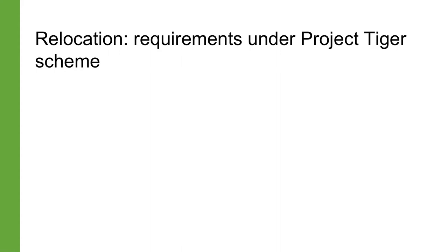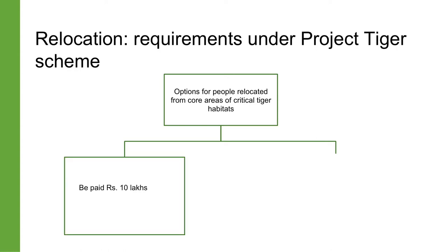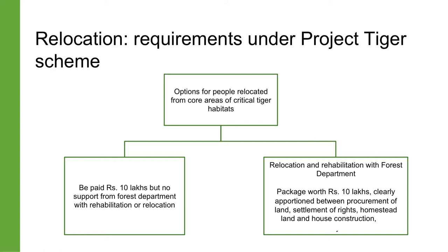Under the Project Tiger scheme, people who may be relocated from the core areas of critical tiger habitats are given two options. The first is that each family will be paid Rs 10 lakhs but will not be supported by the forest department with any rehabilitation or relocation process. The second is for families to go through the relocation and rehabilitation program with the forest department. The package for each family will still be worth Rs 10 lakhs, but the scheme has clearly indicated how that amount should be apportioned between procurement of agricultural land, settlement of rights, homestead land and house construction, and community facilities such as irrigation and sanitation.